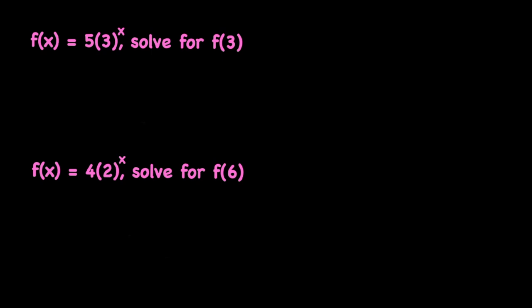Recall from our previous video that exponential functions come in the form f of x is equal to a times b to the x, where a is the initial value or y-intercept and b is the common ratio.